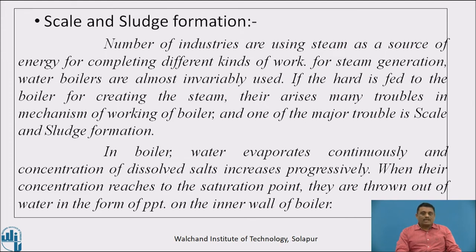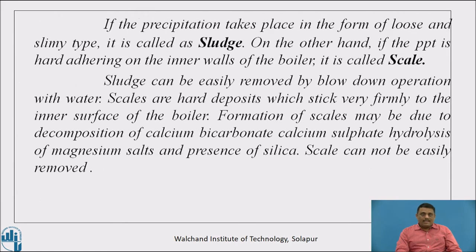In a boiler, water evaporates continuously and the concentration of dissolved salts increases progressively. When their concentration reaches saturation point, they are thrown out of the water as precipitate and get deposited on the inner walls of the boiler. If the precipitation takes place in a loose and slimy form, it is called sludge. If the precipitate is hard and adhering to the inner walls of the boiler, it is called scale.